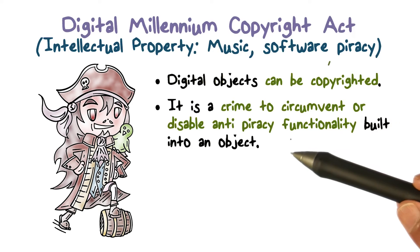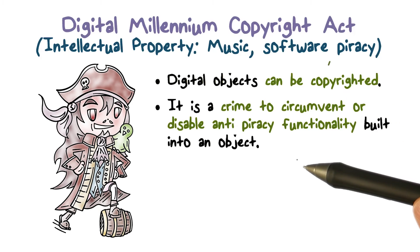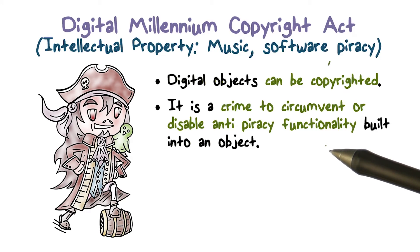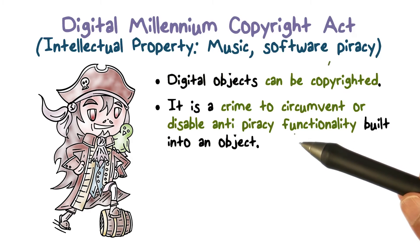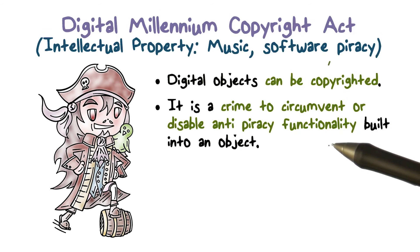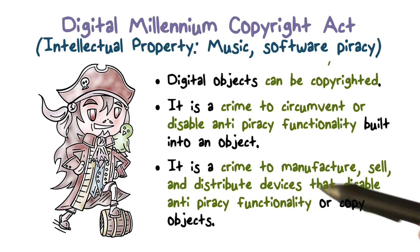DMCA says it is a crime for you to circumvent and disable any measures that have to do with copy protection and anti-piracy. So if these are built into the object, you can't reverse engineer and undo that — that act is considered illegal.